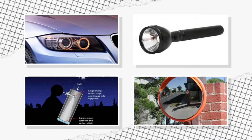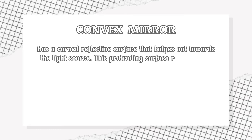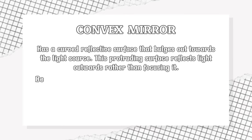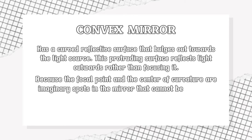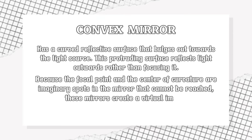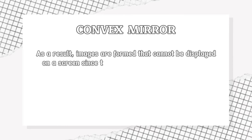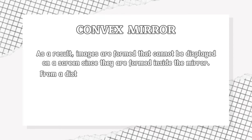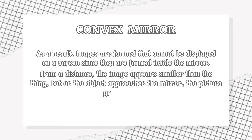Concave mirrors are used in automotive headlights, reflecting telescopes, torch lights, and other applications. A convex mirror has a curved reflective surface that bulges out towards the light source; this protruding surface reflects light outward rather than focusing it. Because the focal point and the center of curvature are imaginary spots in the mirror that cannot be reached, these mirrors create a virtual image. Images are formed that cannot be displayed on a screen since they are formed inside the mirror. From a distance the image appears smaller than the object, but as the object approaches the mirror, the picture grows larger.